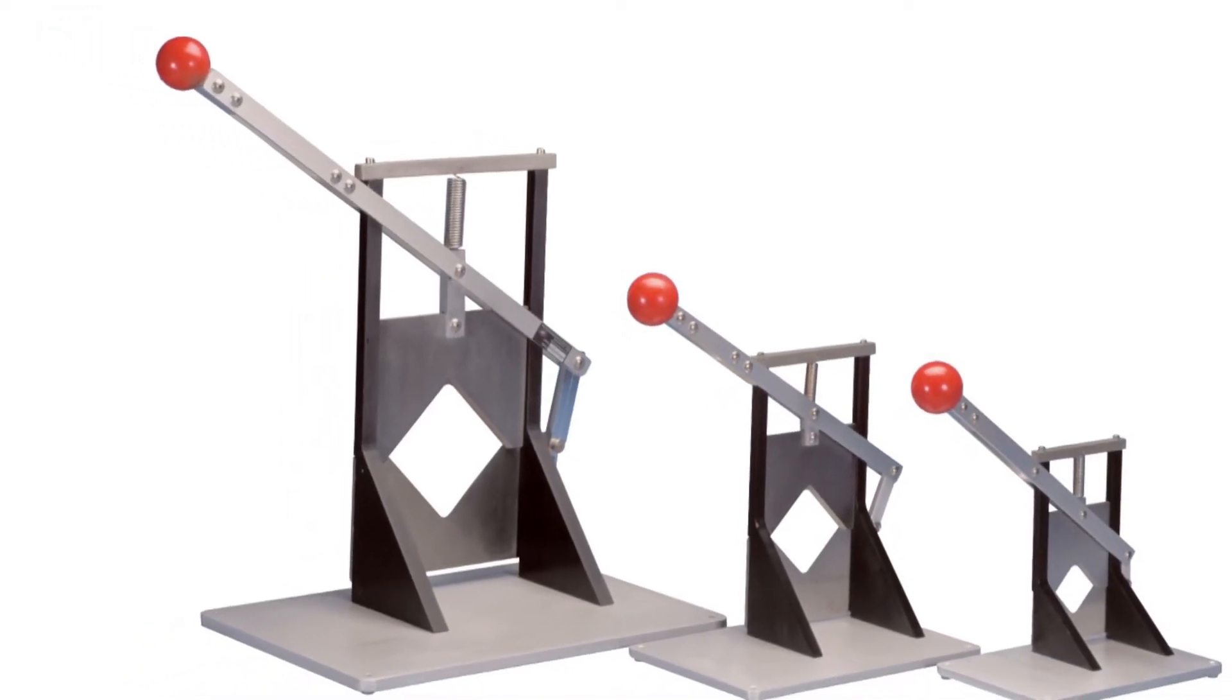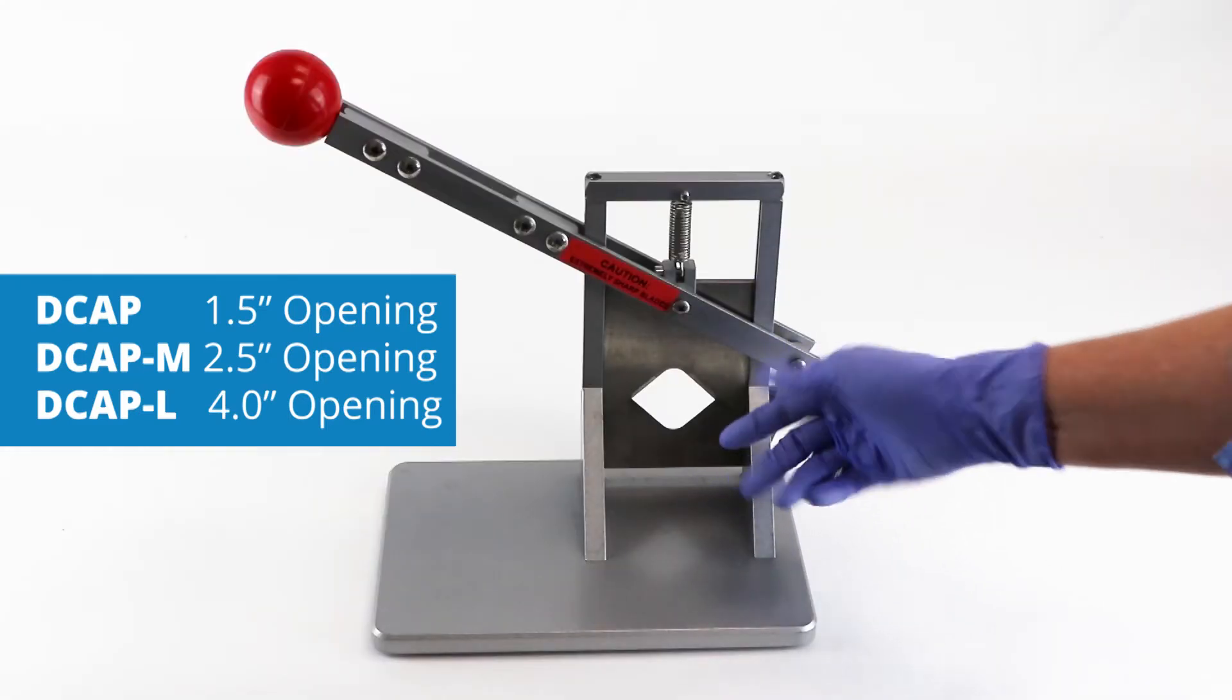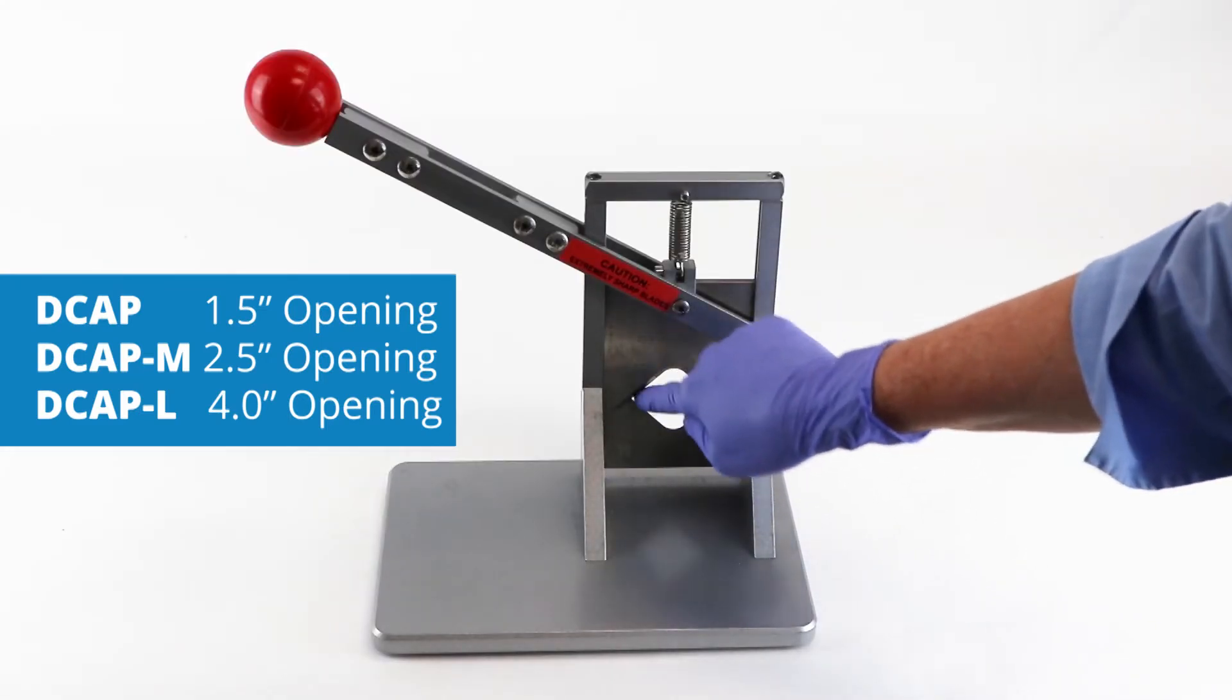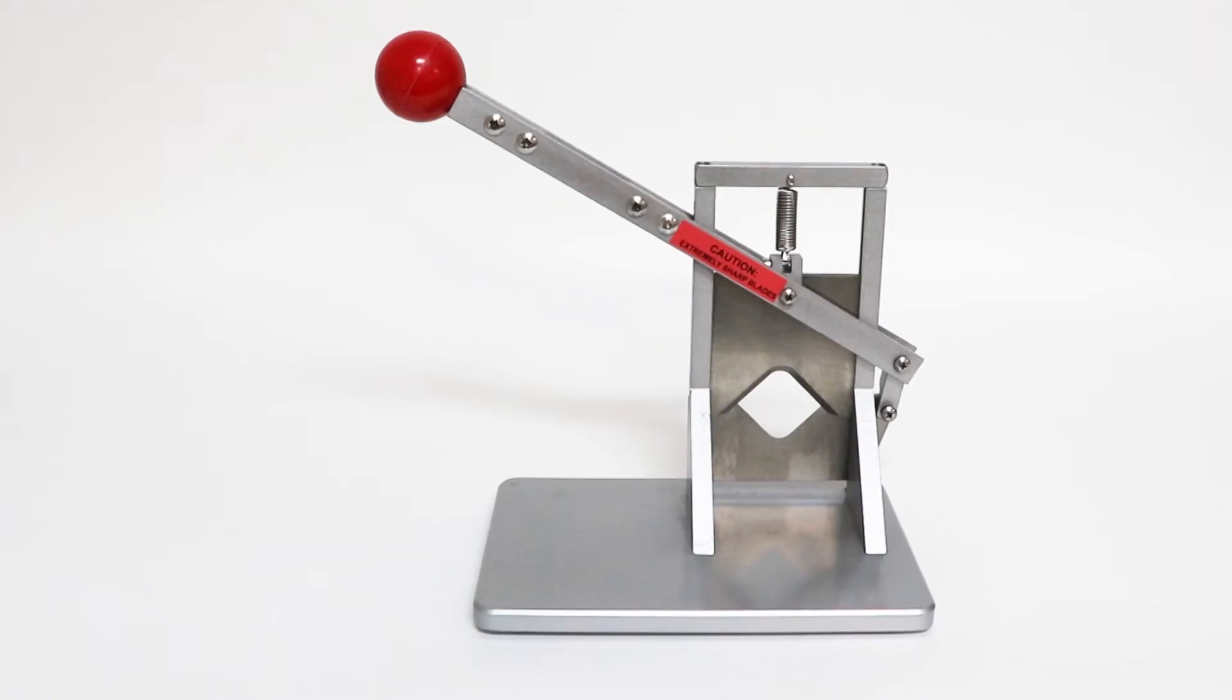These guillotines are designed for small animal research and they come in three sizes. This is a small with an inch and a half opening. Larger ones are two and a half and a little over four inches.